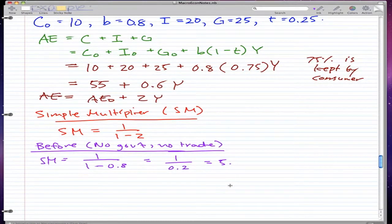So, before, before when we had no government and no trade, the SM or Z was 0.8.